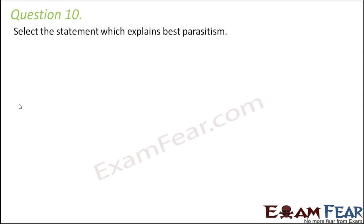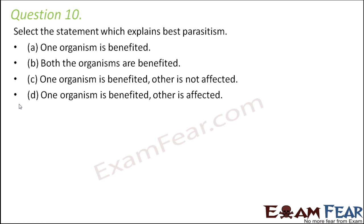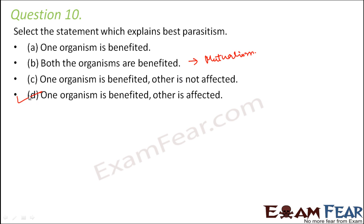Question number 10: select the statement which best explains parasitism. The options are: one organism is benefited; both organisms are benefited; one organism is benefited and the other is not affected; or one organism is benefited and the other is harmed. In parasitism, the parasite is benefited and the host is negatively affected, because the parasite derives its nutrients from the host. So option D is correct. If both organisms were benefited, that would be mutualism; if one benefits and the other is unaffected, that is commensalism.